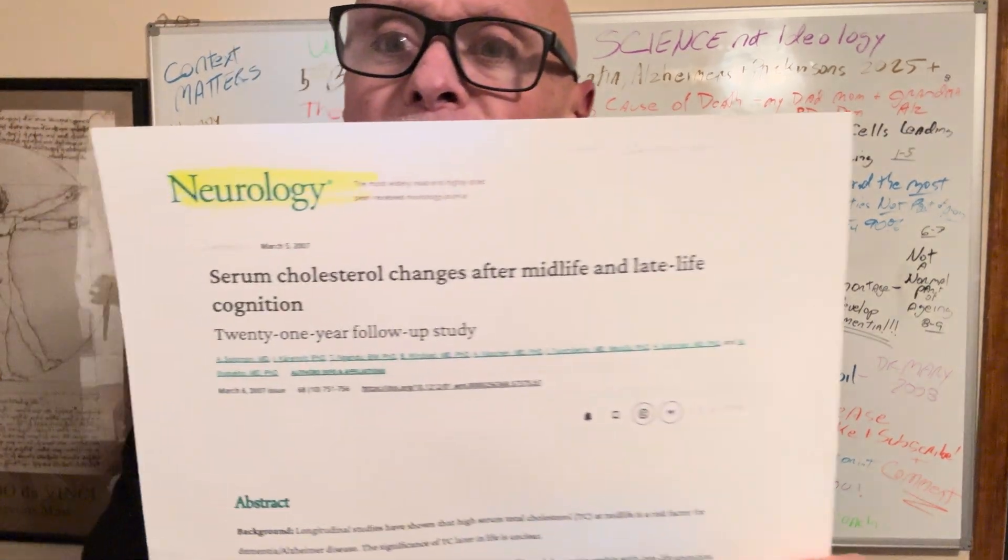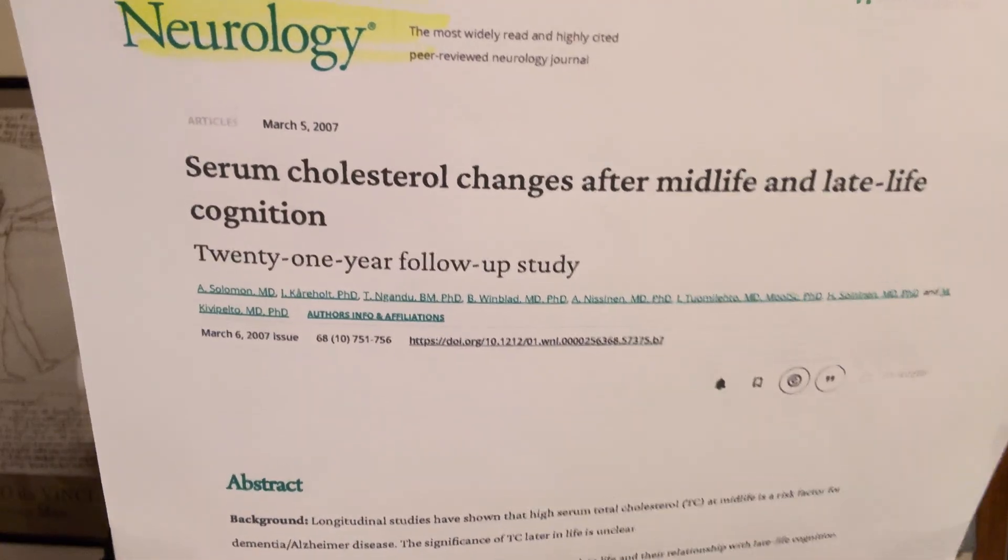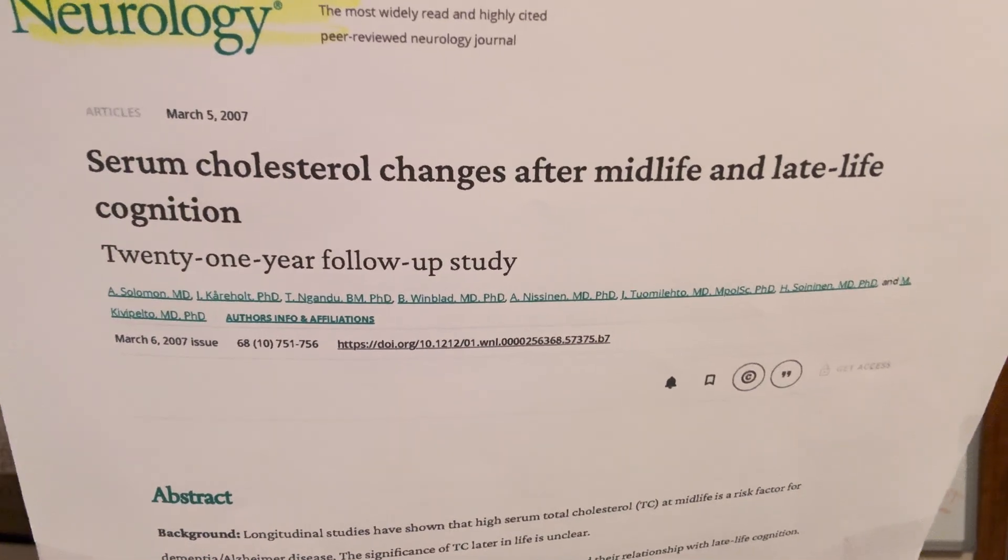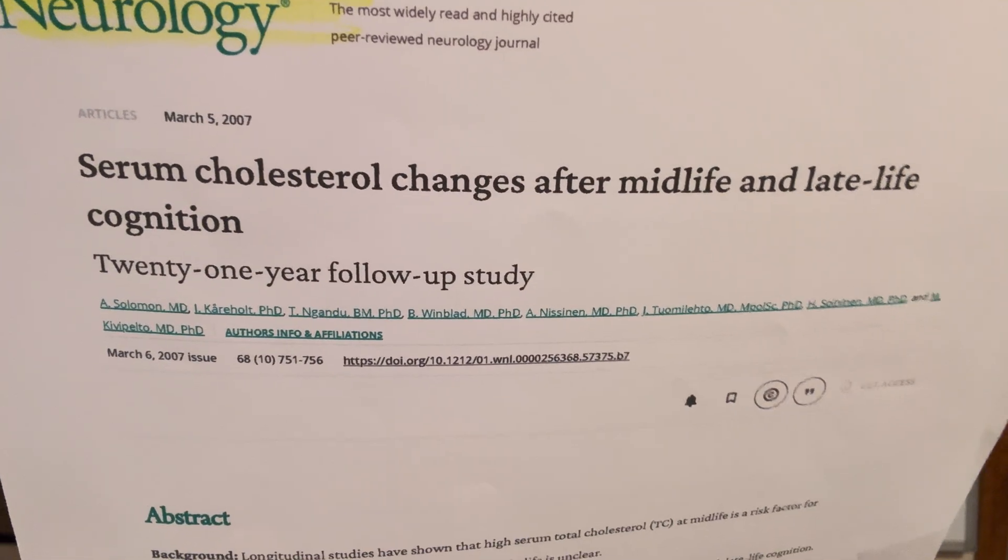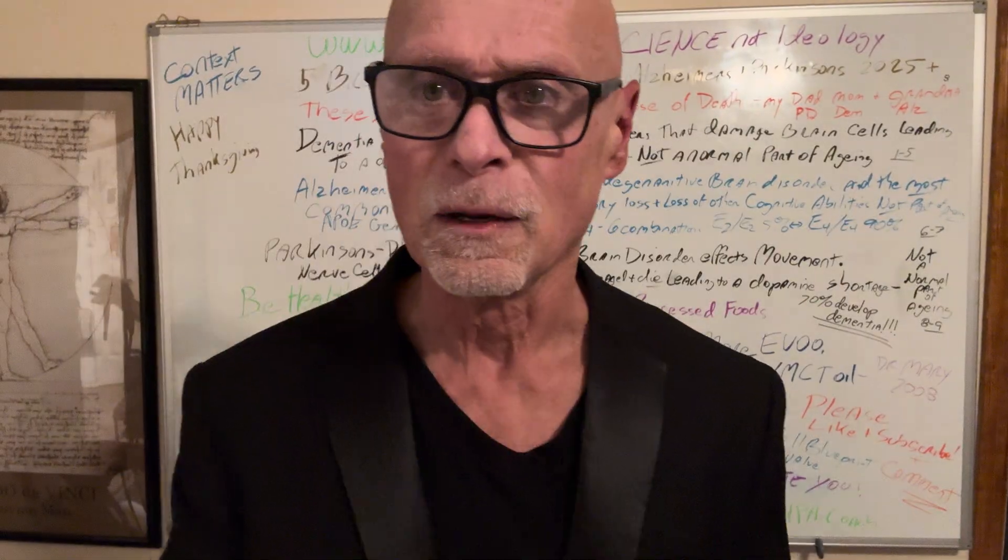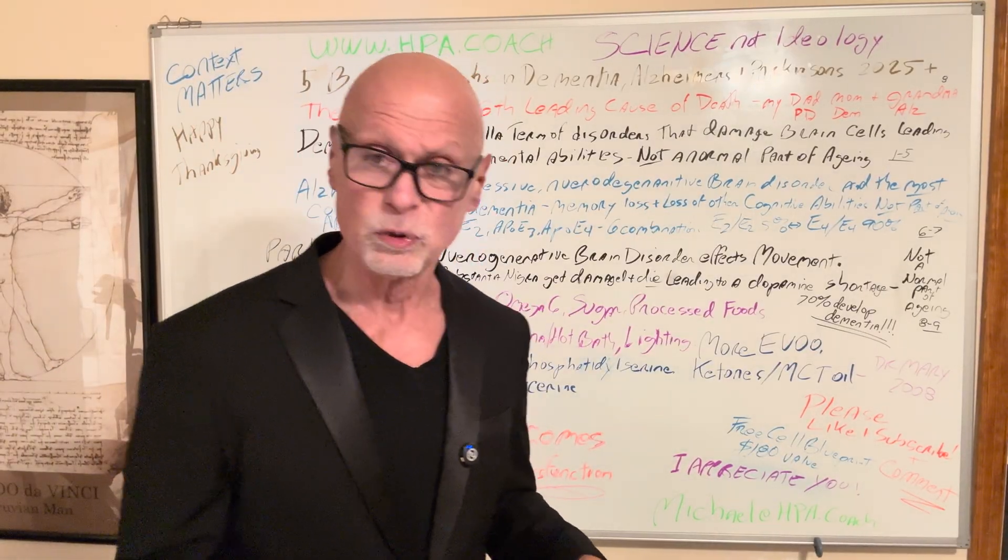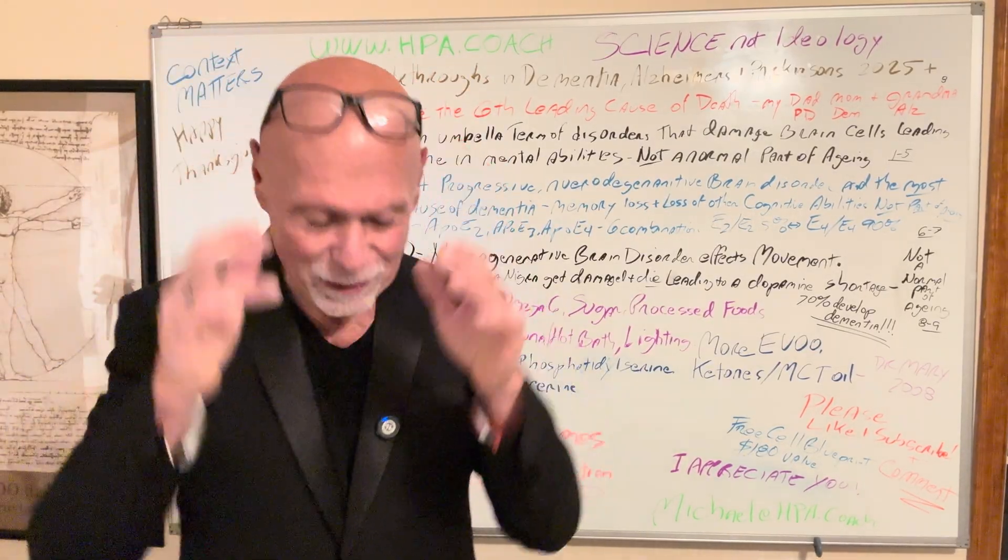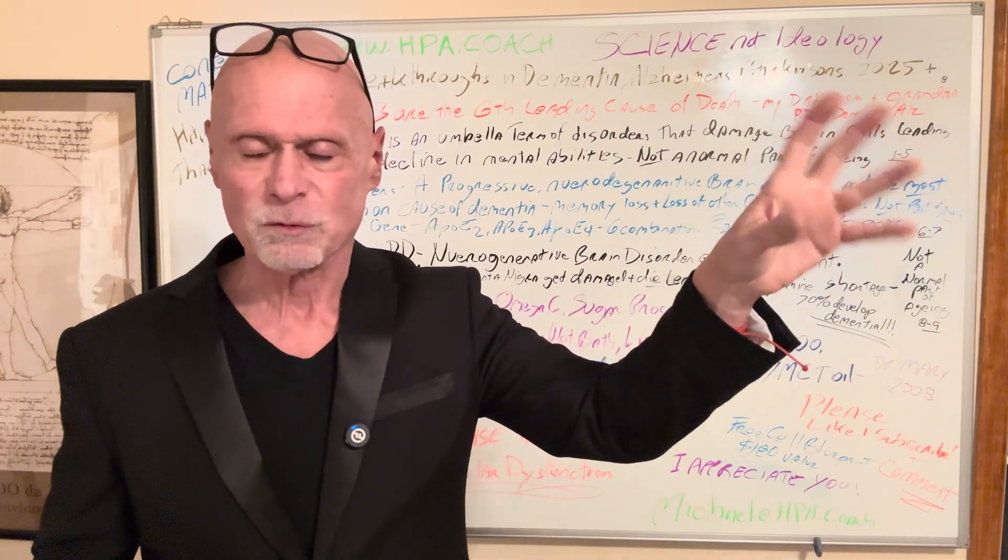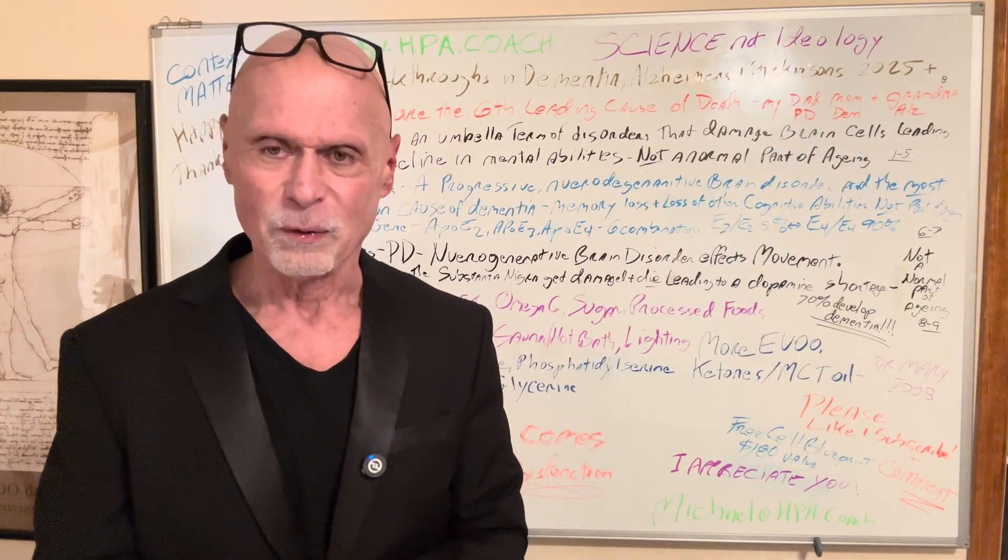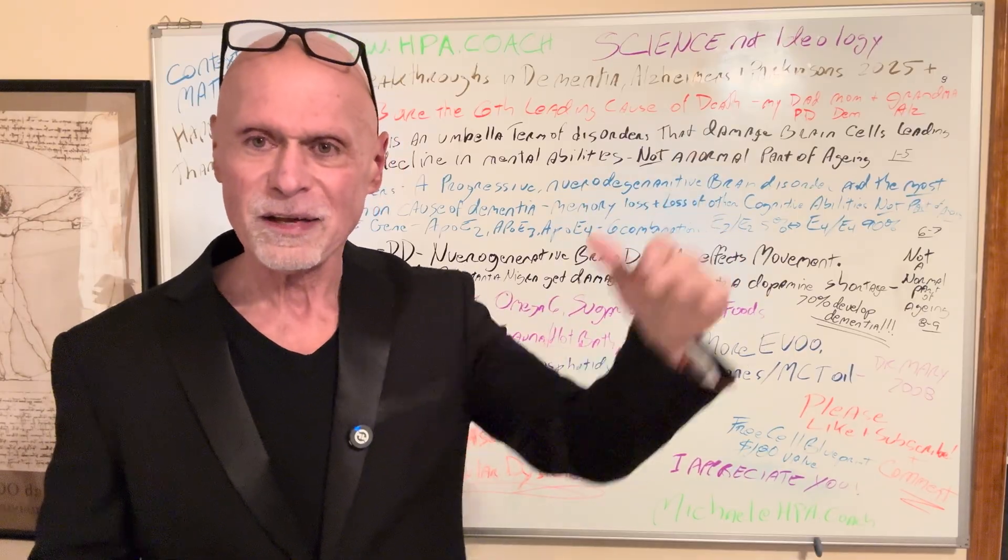Okay, first paper says the relationship between total cholesterol and dementia seems to be bi-directional. Basically, what this is saying, and all of these will be in the description below so you can read them yourselves. It's saying that basically it goes back to that cholesterol video I did with the 12.8 million people, where they said as you get older, you live longer with higher cholesterol.